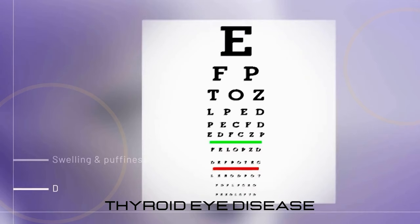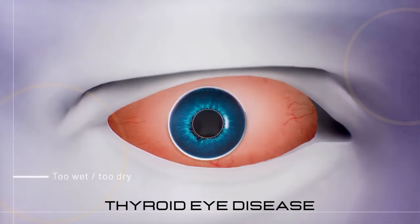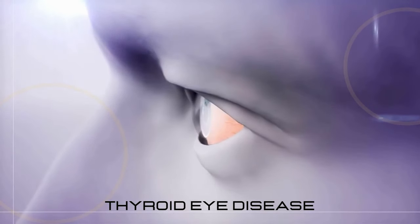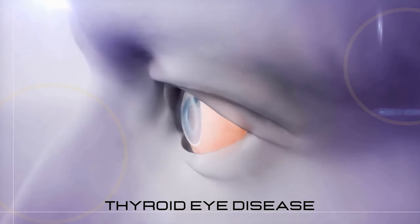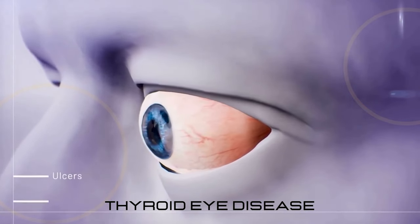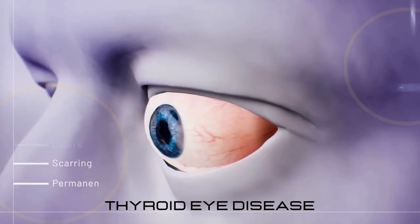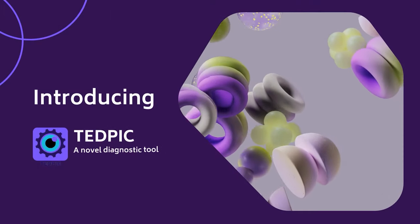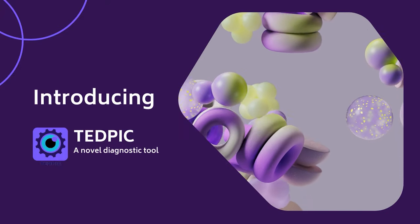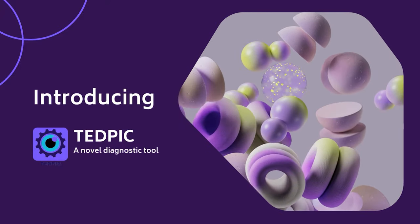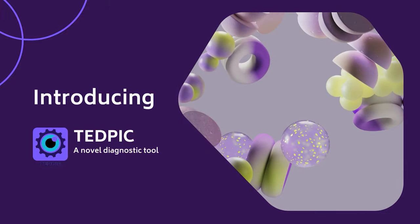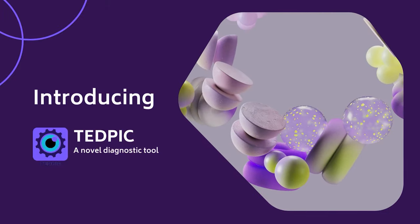This causes redness, pain, swelling, and cross-eyedness that further leads to double vision. Patients also suffer from proptosis, which is protrusion of the eye. Since this disease affects countless lives, causing discomfort and affecting vision, we at TETPIC knew that there had to be a better way to diagnose and track these changes accurately.